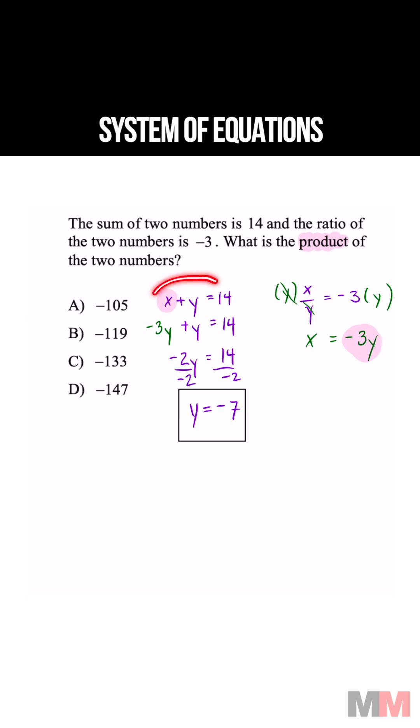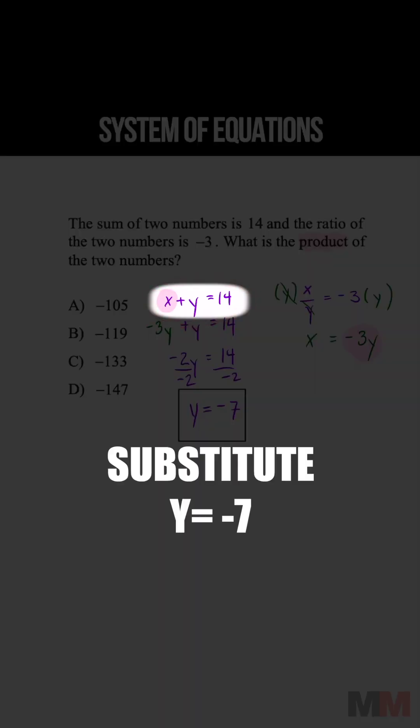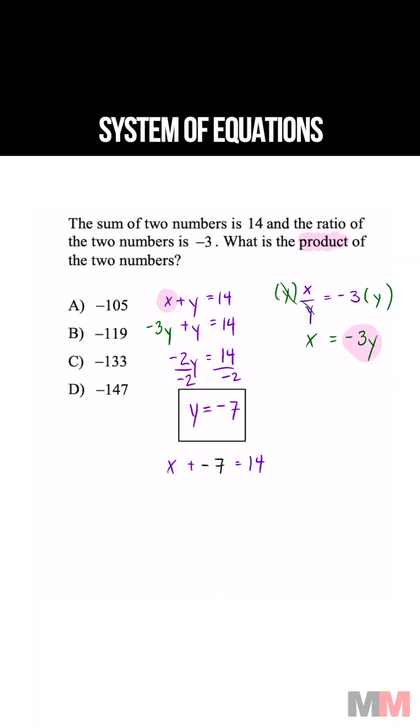Now that you have that, you can use one of the original equations. I'm just going to go with this one because it's easier. Substitute the value of y, and now we can get x by itself by adding 7 to both sides.